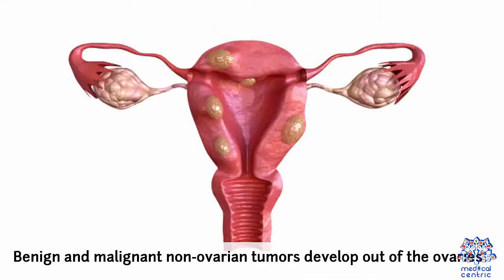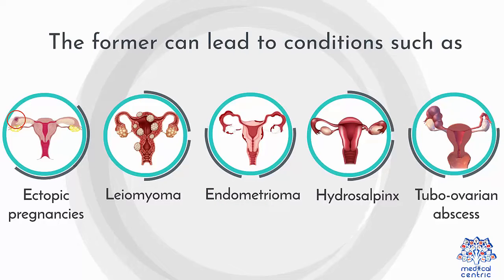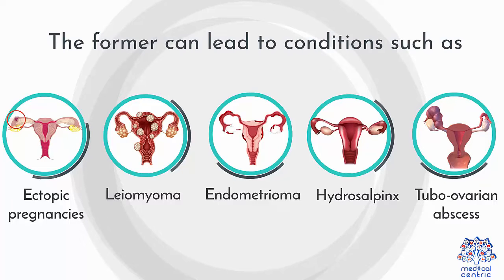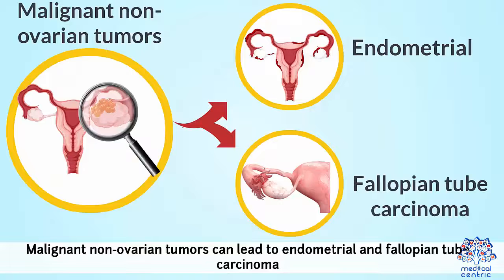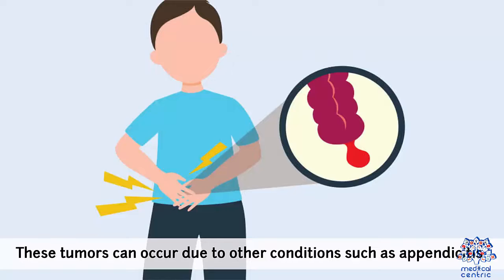Benign and malignant non-ovarian tumors develop outside of the ovaries. Benign non-ovarian tumors can lead to conditions such as ectopic pregnancies, leiomyoma, endometrioma, hydrosalpinx, and tubo-ovarian abscess. Malignant non-ovarian tumors can lead to endometrial and fallopian tube carcinoma. Finally, gynecologic adnexal tumors do not have anything to do with the fallopian tubes, ovaries, uterus, or connective tissue, and can occur due to other conditions such as appendicitis.